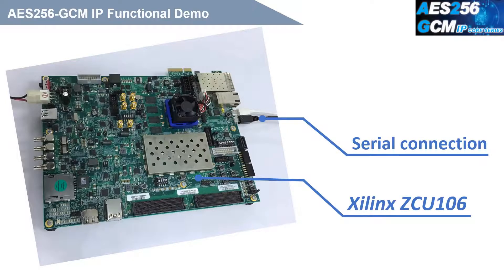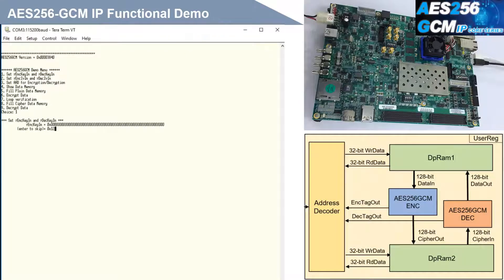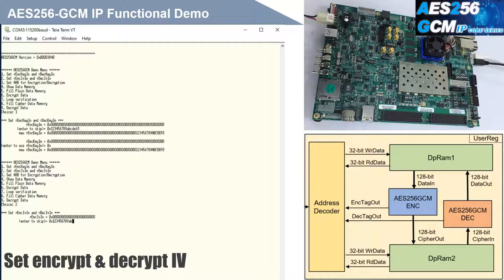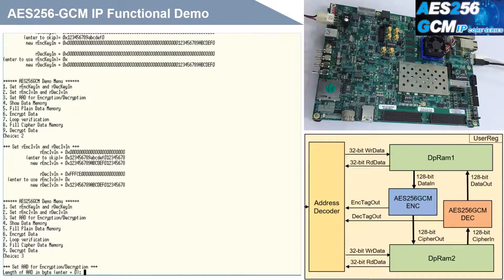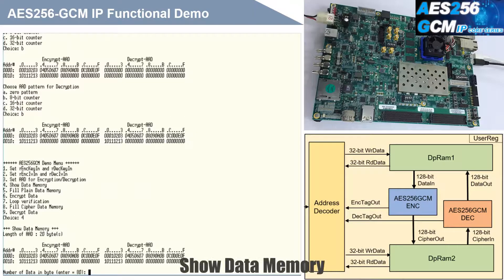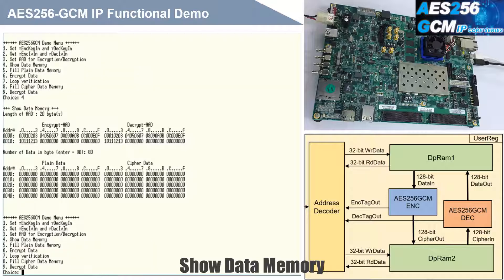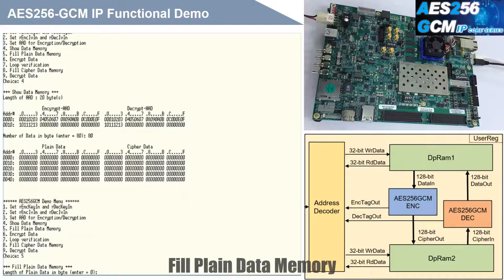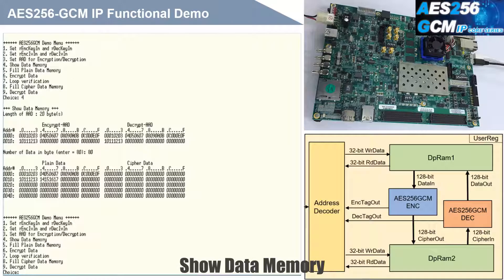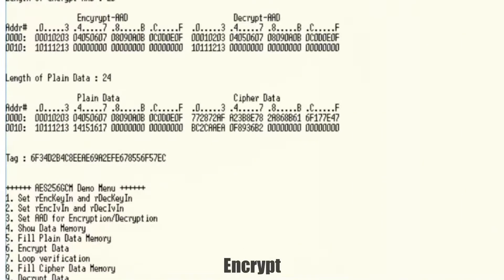Design Gateway provides an AES-256-GCM IP functional demonstration on a Xilinx ZCU-106 evaluation board. In the demo, AES-256-GCM IPs are used to encrypt and decrypt data between two memories in the FPGA and provide an authentication tag. Users can fill memory with additional authenticated data, AAD, plaintext or cipher data patterns, set the encryption/decryption key and initialization vector, and control test operations via a serial console.